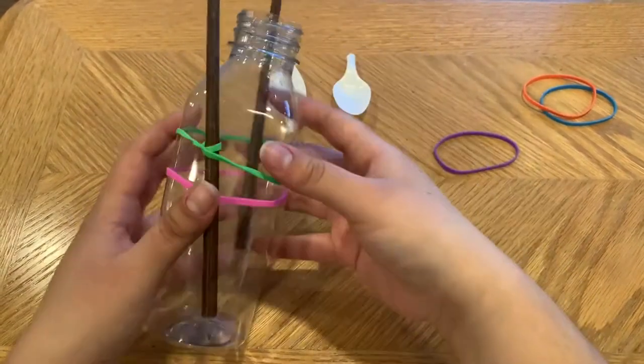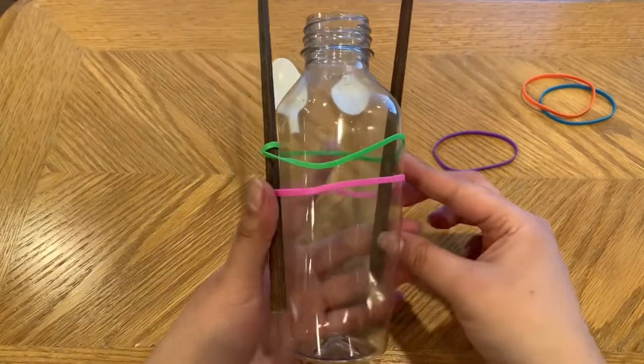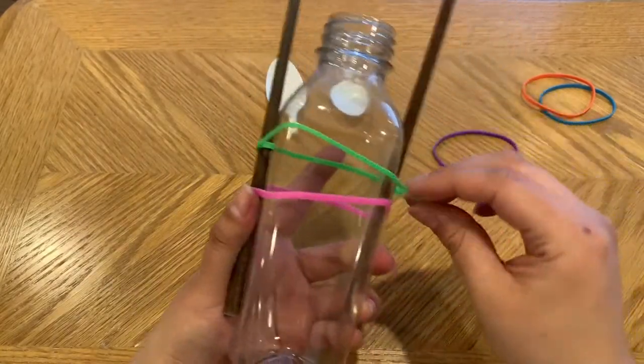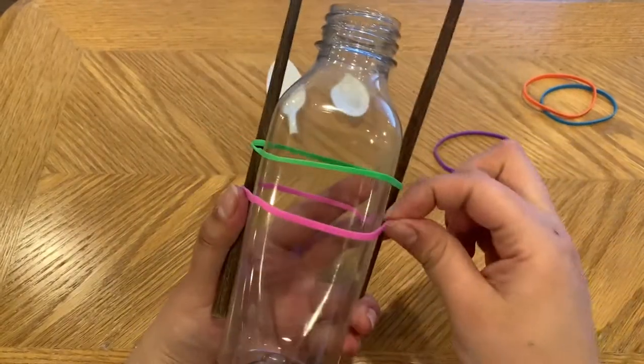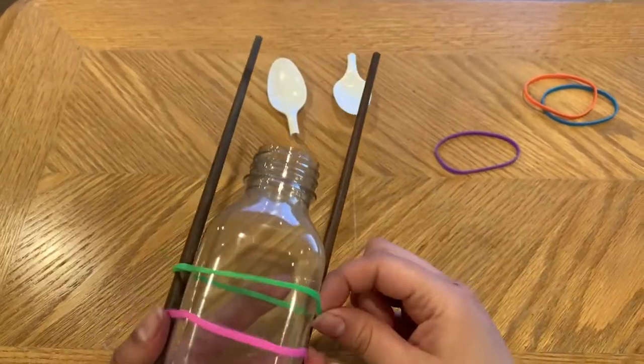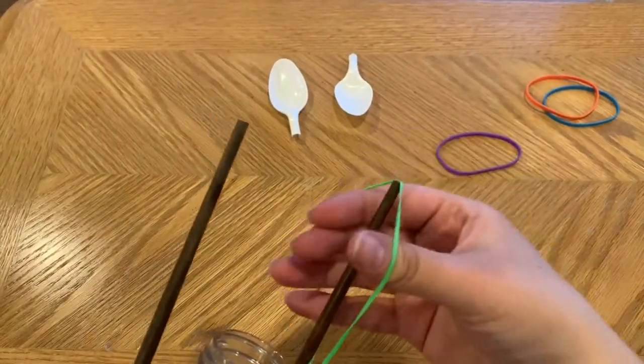This holds the chopstick in more securely so it doesn't fall out, and then we do the same with the other side. We twist it and pull it over the chopstick.